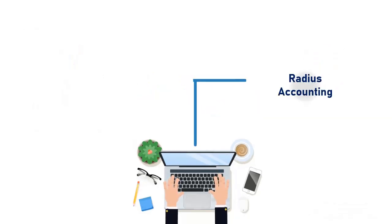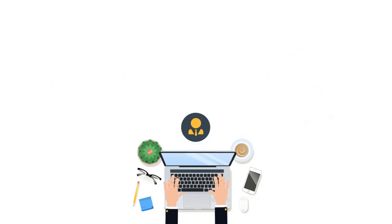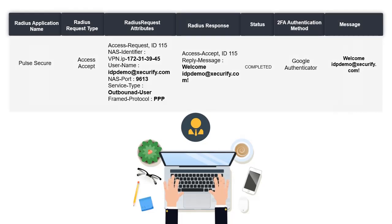Additional features like radius accounting and radius auditing are also included in the Mini Orange feature stack. This allows the administrator to keep track of the Pulse Secure usage of the users and all of their login events.